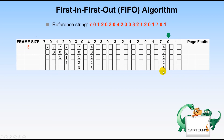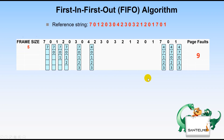Allocate 0 — no free frame, victim is 1 (first in among 4, 7, 1, 2, 3). Replacing 1 with 0 gives 4, 7, 0, 2, 3. Allocate 1 — no free frame, victim is 2 (first in among 4, 7, 0, 2, 3 — 2 came in first at this point). Replacing 2 with 1 gives 4, 7, 0, 1, 3. Counting page faults: there are 9 page faults with a frame size of 5.